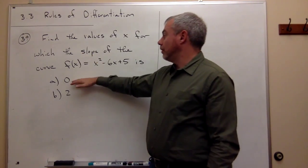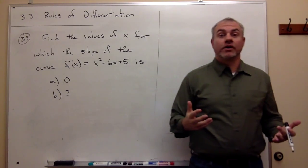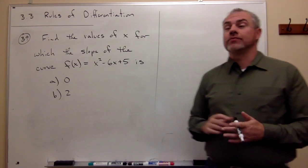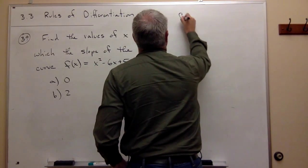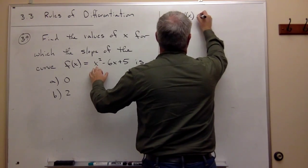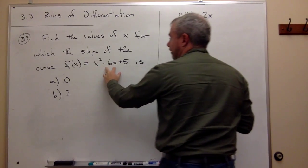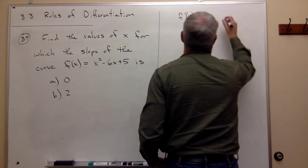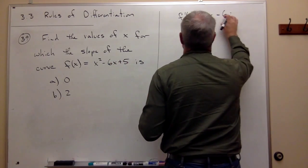So if I'm trying to find where the slope is 0, I need to take the derivative, set it equal to 0, and see what x values would give me 0. So let's take the derivative of this function, f'(x), and the derivative of x² by the power rule should be 2x. The derivative of -6x is -6x to the 0, or just -6.